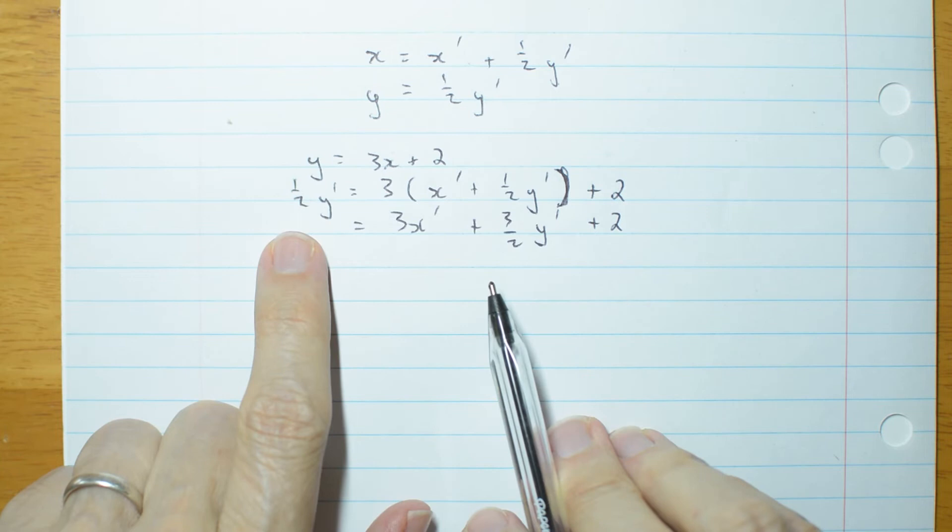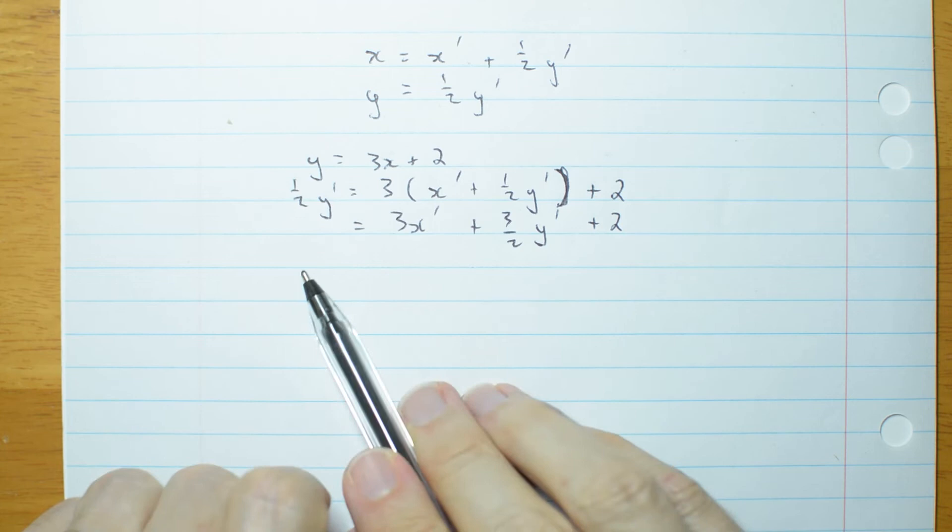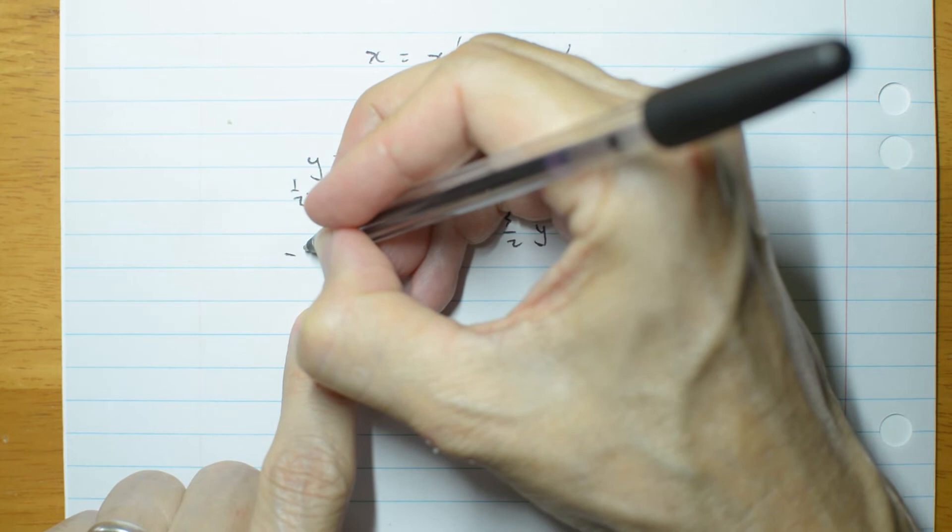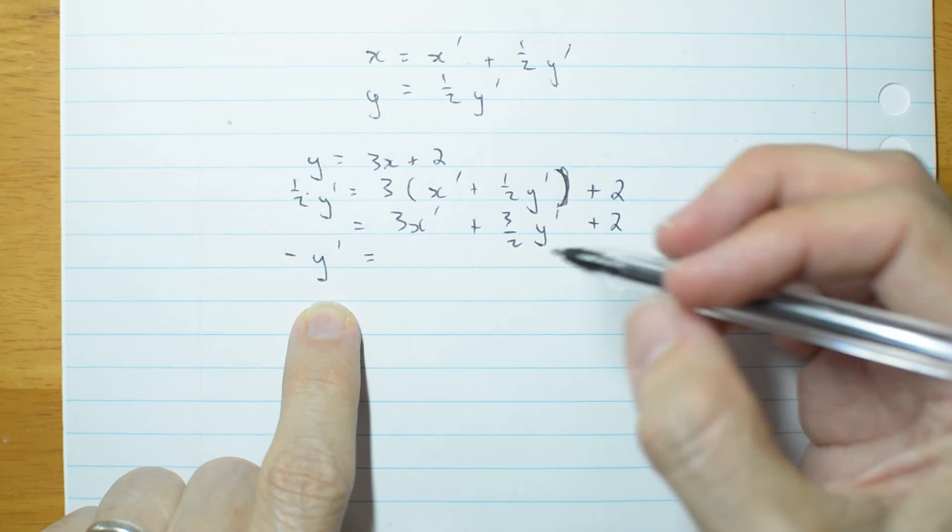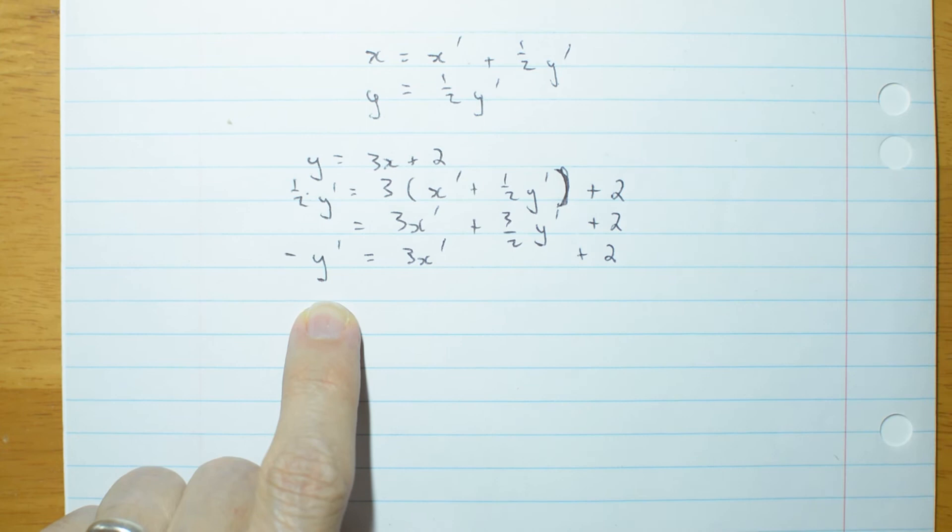First, let's collect like terms. The y prime is going to go on one side. I'll put it on this side over here. A half, take away one and a half, is going to be, oh, wait a second, is negative 1y primed. Then on this side, I'm still left with 3x primed, plus 2.